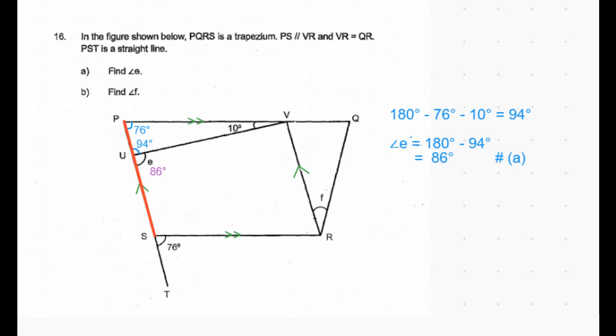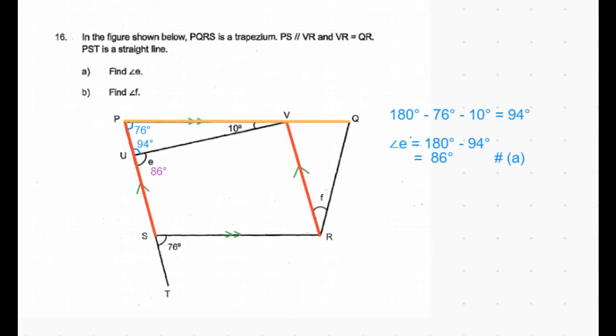Coming to part B of the question, we need to find angle F. Consider the two parallel lines PS and VR, marked in red, and the intersecting line PQ.